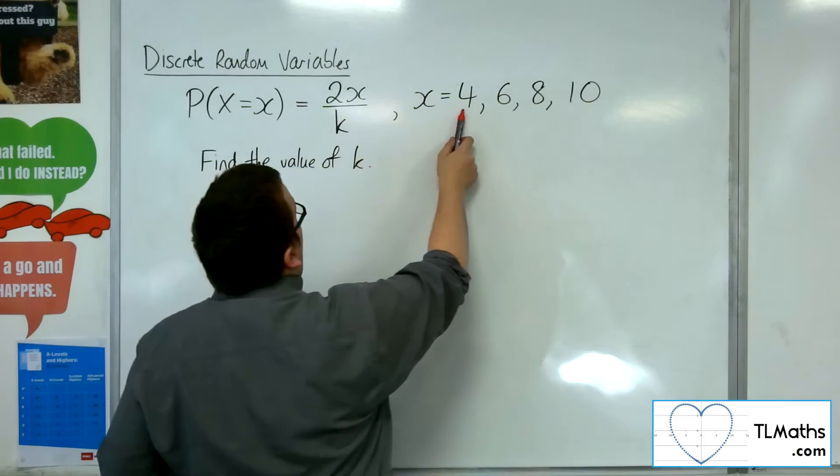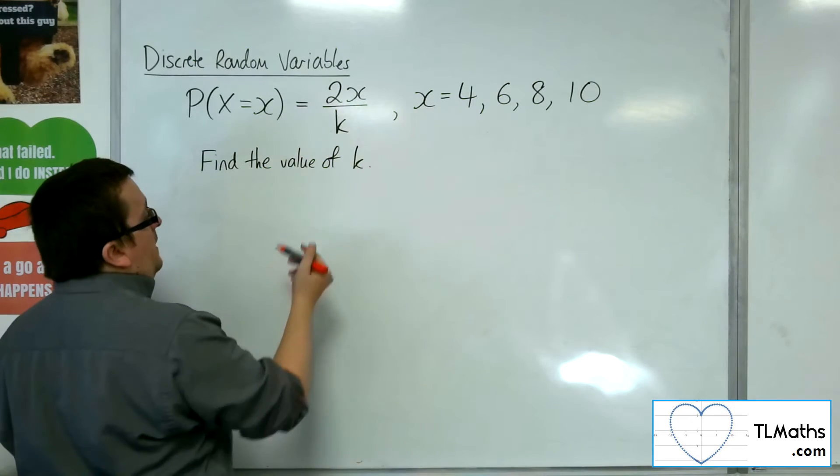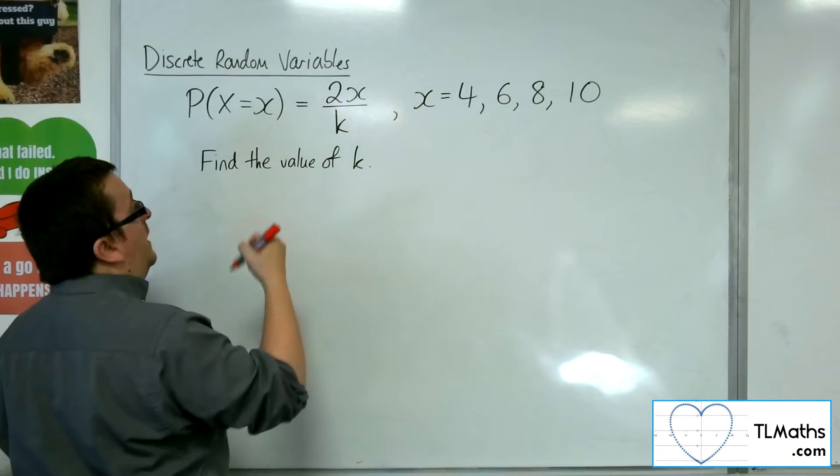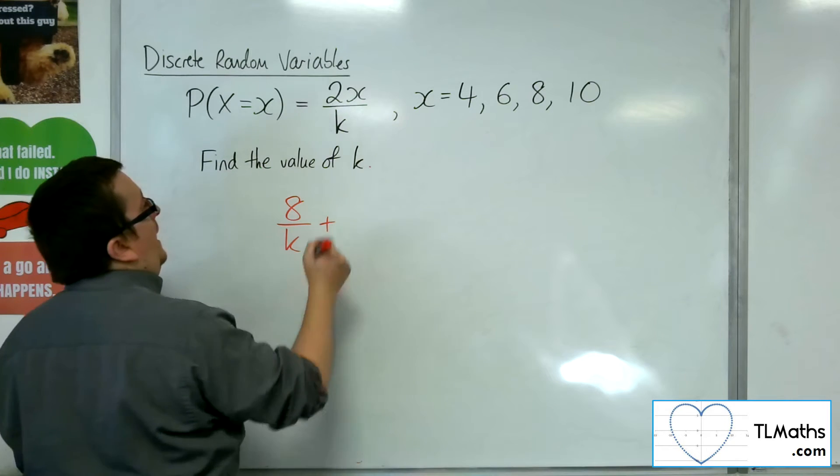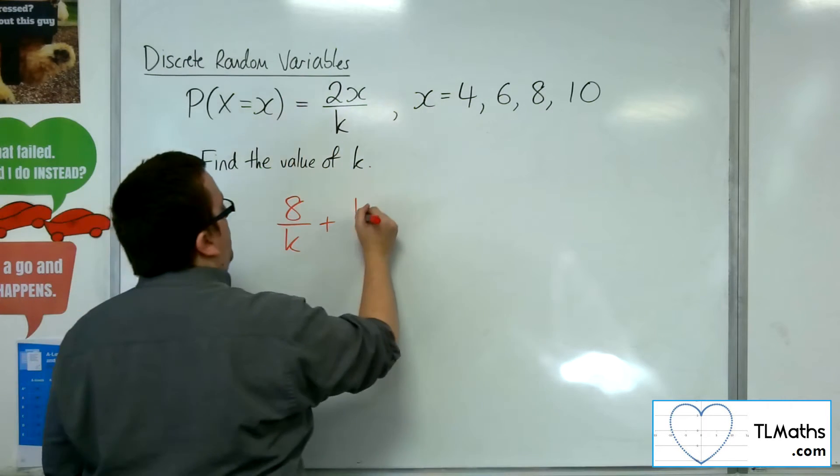So, when x is 4, I can substitute that in and I'm going to get 2 lots of 4 over k. So, that would be 8 over k. And when I substitute in 6, I'm going to get 12 over k.